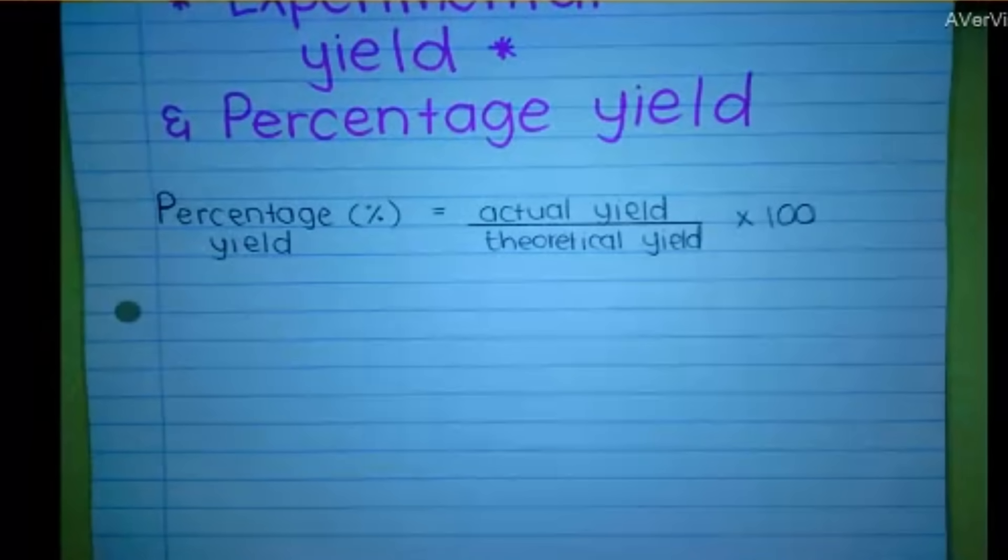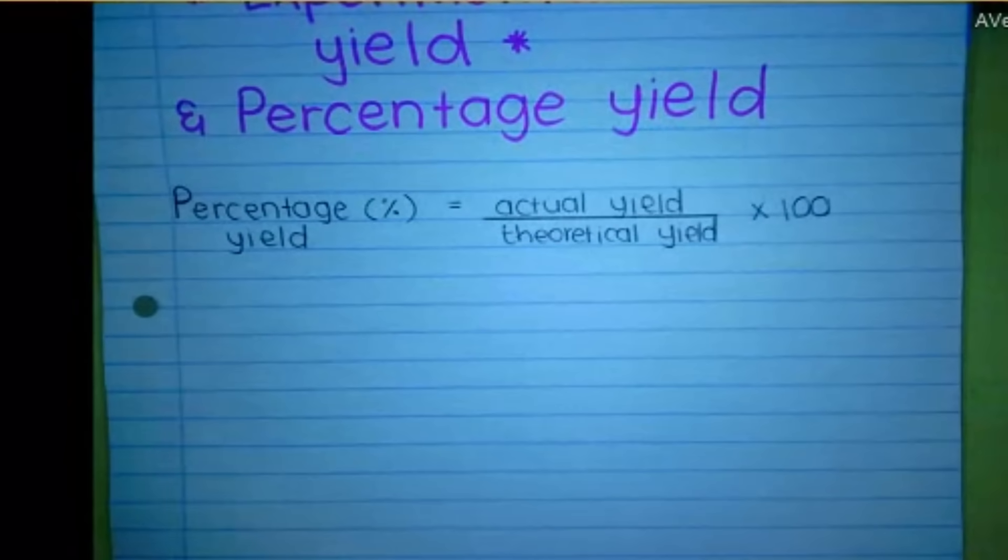In labs, we might not always get such a high percentage yield. Why would we get less than what we expect? If I do the chemistry and I expect to get 30 grams, why would I get anything less? Well there's various reasons, sometimes the reaction might actually not finish. It might not run to completion.